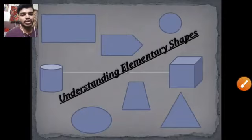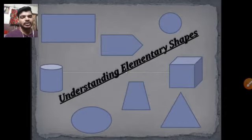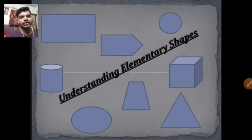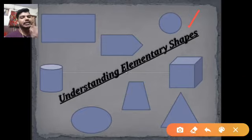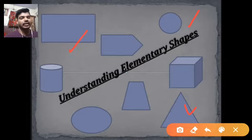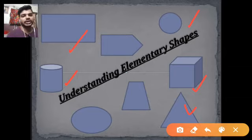Hello students, this is Rupind Soni, your VMAT mentor, and today we are going to learn chapter number 5: Understanding Elementary Shapes. First of all, what are elementary shapes? These are the basic geometrical shapes which we come across in day-to-day life. For example, circle, triangle, rectangle, and in three dimensions, cylinder, cube, and sphere are all elementary shapes.